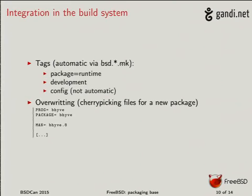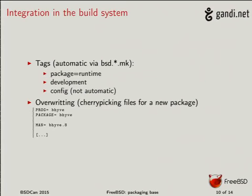How do we populate the tags everywhere? One thing I didn't want to do was go to every single Makefile and add tags manually. Fortunately, most binaries we build go into the runtime package. I went into all the BSD.something.mk files and figured out at install time what kind of thing is being installed. For example, in BSD.prog.mk the default tag is 'package equals runtime.' In BSD.lib.mk, the .so file goes to runtime, but the .so symlink and the .a file go to development.